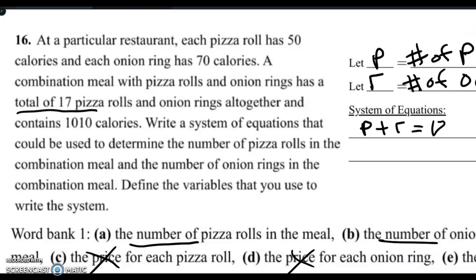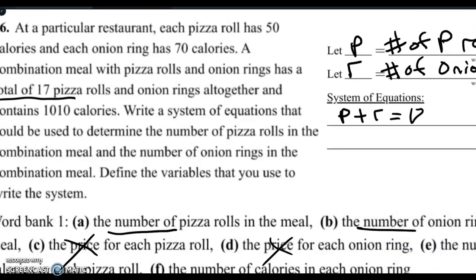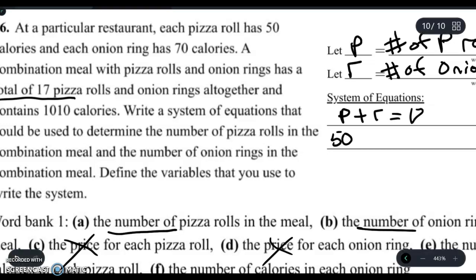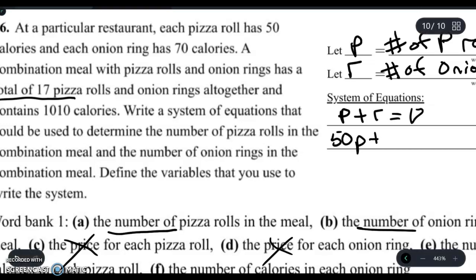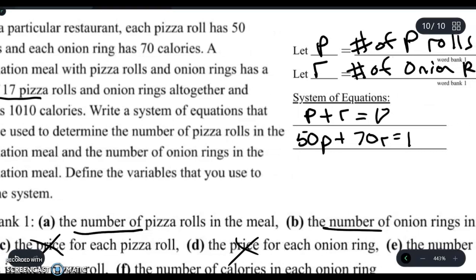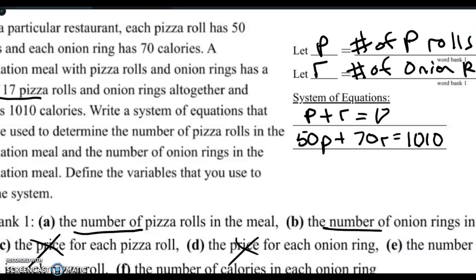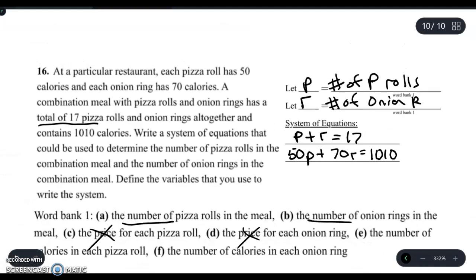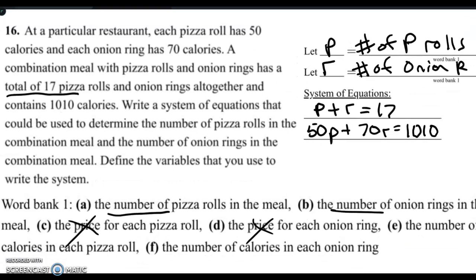We don't know how many pizza rolls and onion rings there are, but we know if we take 50 times the pizza rolls — because it's 50 calories times each pizza roll — plus 70 times the number of onion rings, it will equal 1,100. And that's our system of equations right there. In a later video we're going to do solving them, but for now that's how you write a system of equations. Thank you for checking out Mr. Will's videos. Have a nice day.